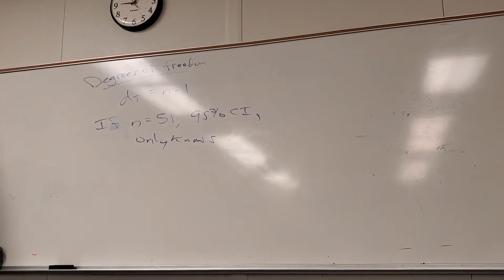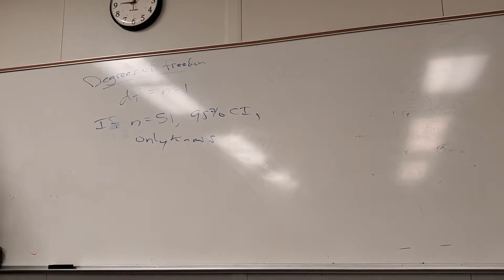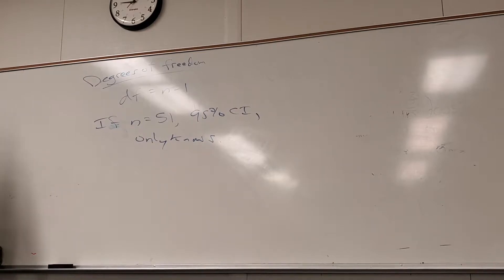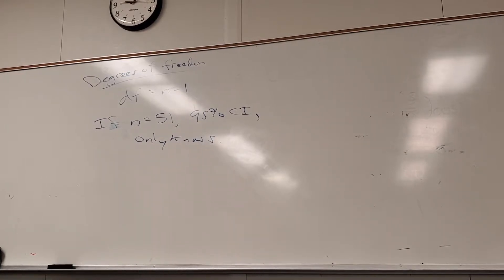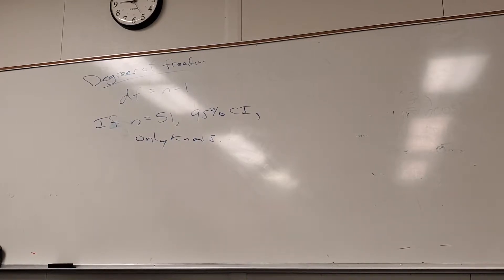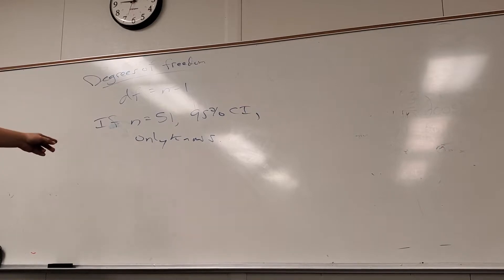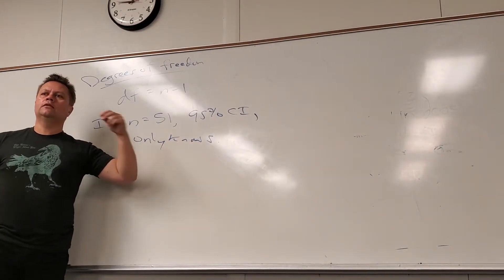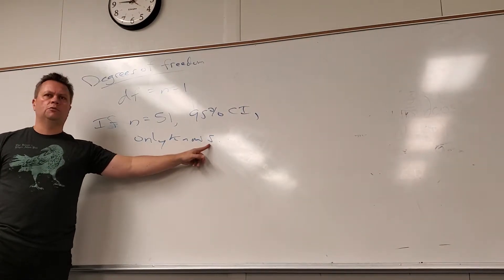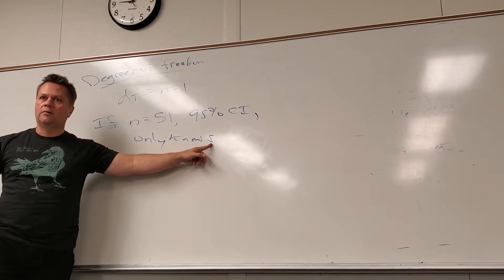Why can I do anything with this problem? What allows me to do something, period? What about 51? Greater than 30 — so I've always got to have a normal distribution before I can use Z or T. Which one am I going to use — Z or T? I have to use T because I only know s. The whole reason T-scores exist is for situations where I only know an estimate of the population standard deviation.